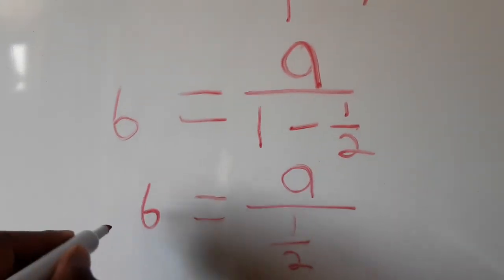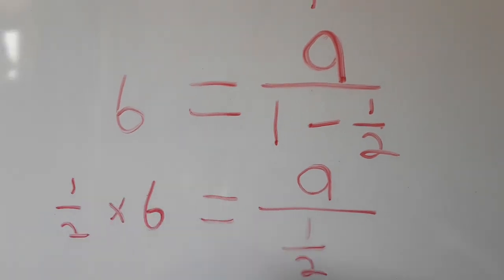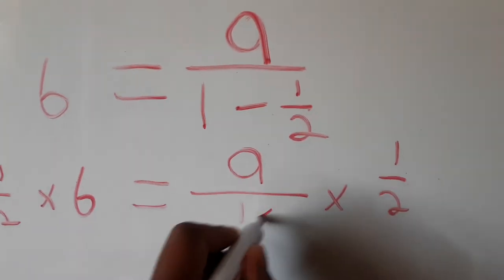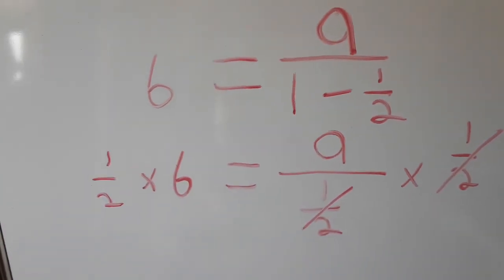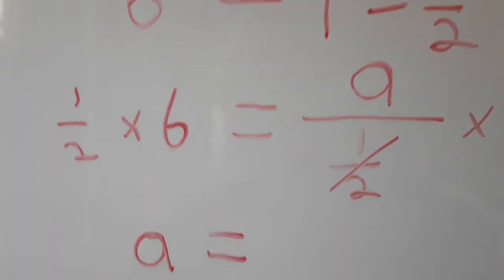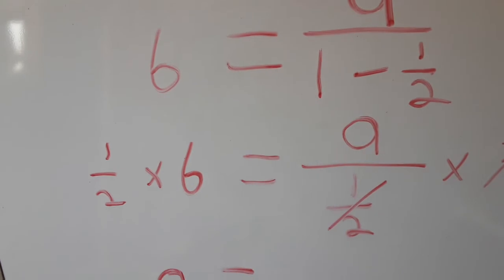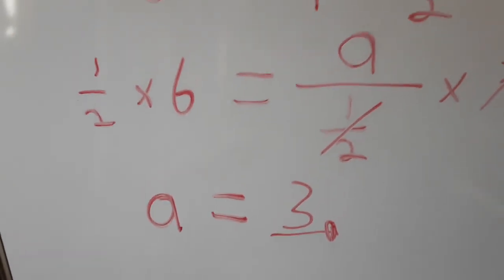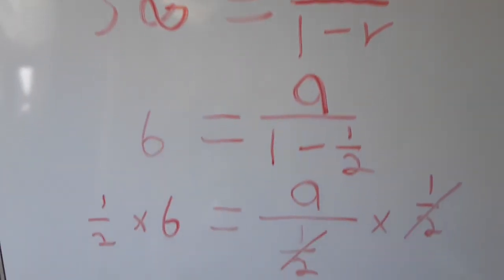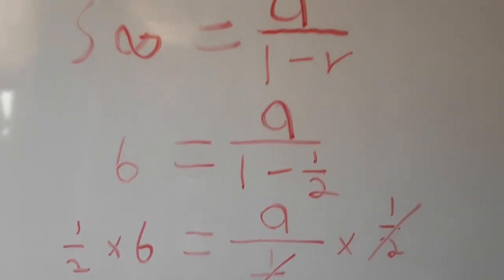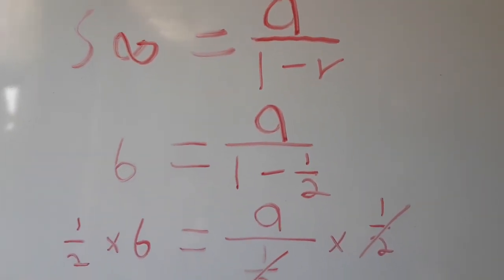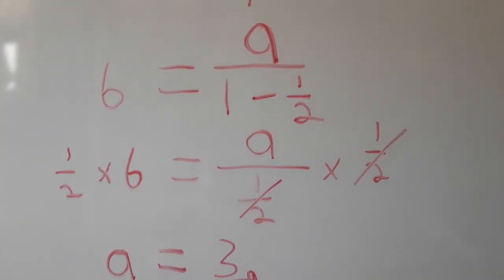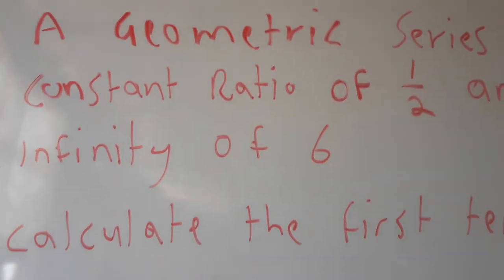We multiply both sides by one half. The one-half terms cancel, and we remain with a equals one half times six, which gives us three. So our first term is three. Please subscribe to Online Education Academy and let me know in the comments what content you'd like to learn.